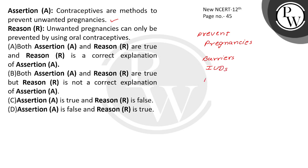Then you have pills — contraceptive pills. Also you have hormonal combinations: progesterone and estrogen combination pills. Also there are emergency contraceptive methods. So the reason states: unwanted pregnancies can only be prevented by using oral contraceptives. So this is incorrect.